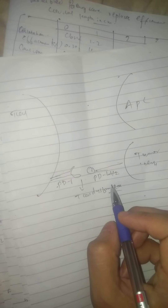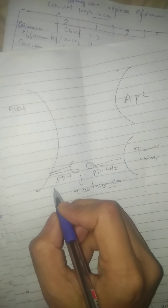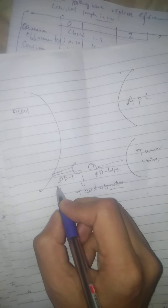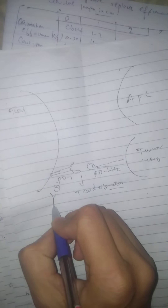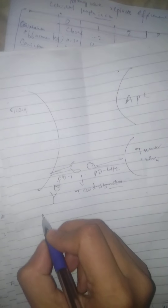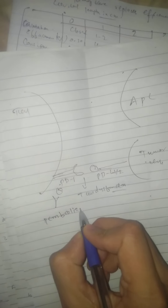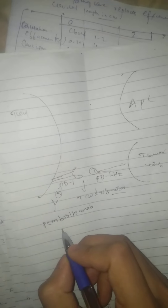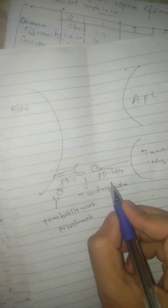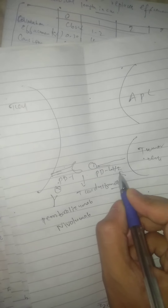This PD-1 interaction is inhibited by antibodies against PD-1. The antibodies against PD-1 are pembrolizumab and nivolumab.